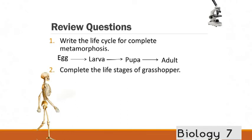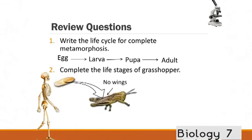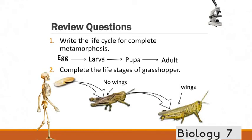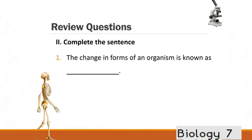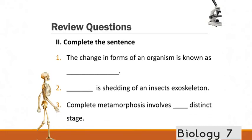Complete the life stages of a grasshopper. Complete the sentence. The change in forms of an organism is known as metamorphosis. Molting is the shedding of an insect's exoskeleton. Complete metamorphosis involves four distinct stages.